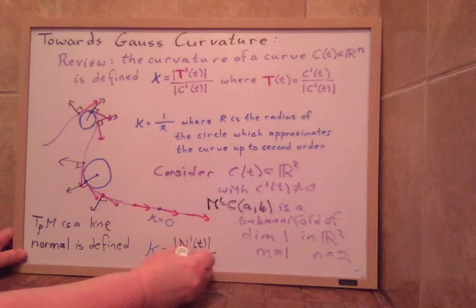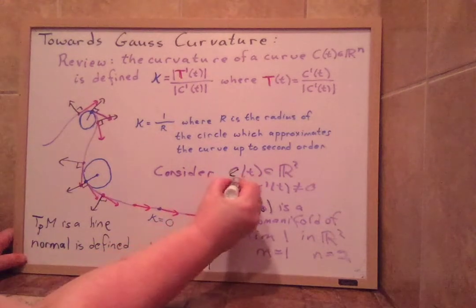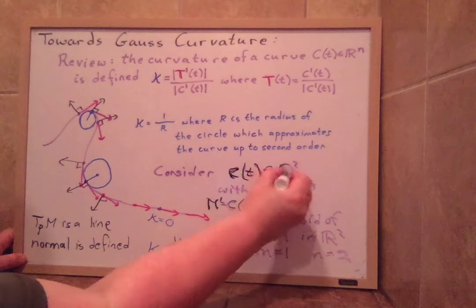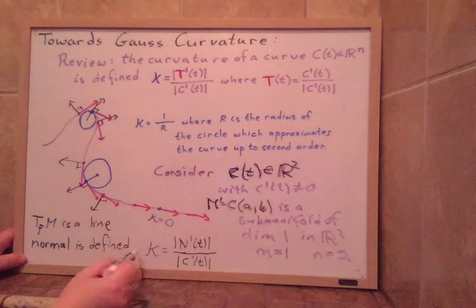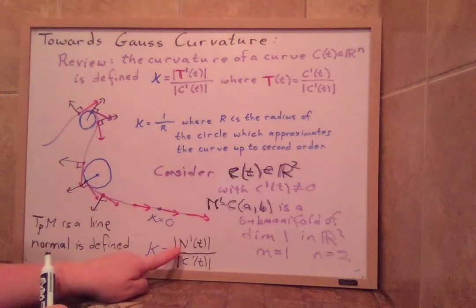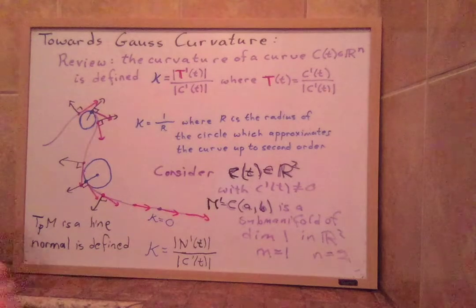Now this is only in the case where C(t) is in R^2. That is the only setting where we have this theorem. Okay, so in the case where C(t) is in R^2, then the change in the N primes divided by C'(t) is equal to the curvature.